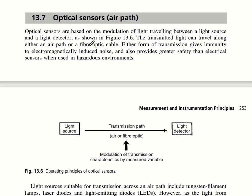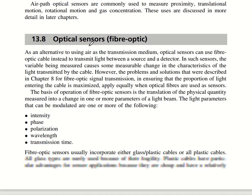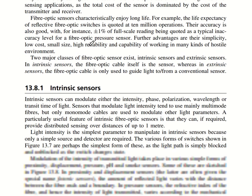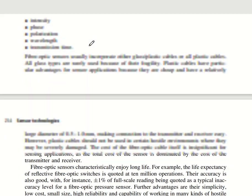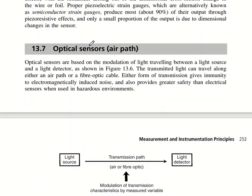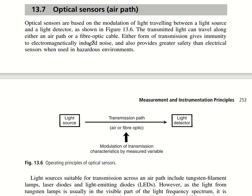There are also two different types of optical sensors — air path and fiber optic path — which I encourage you to read about through the book. That concludes today's class. If you have any doubts, queries, suggestions, or feedback, please mention them in the comment section below. Thank you very much for listening, goodbye for now.